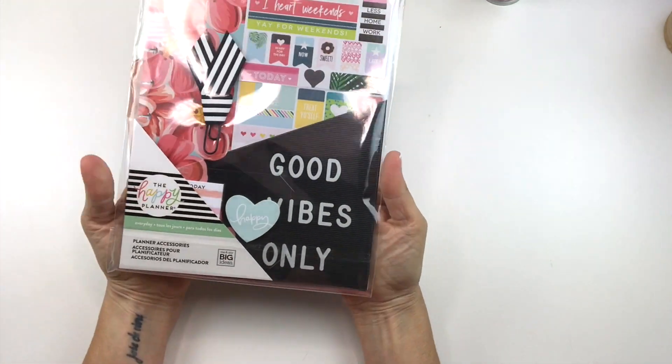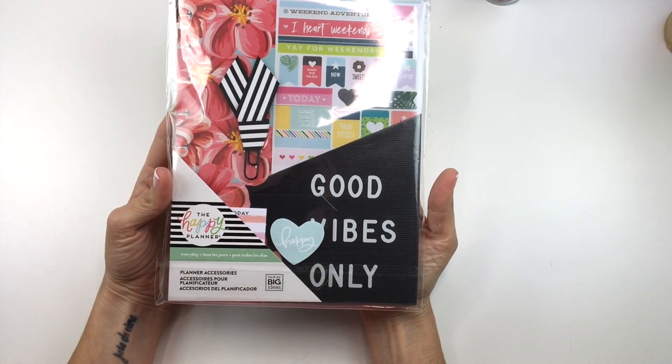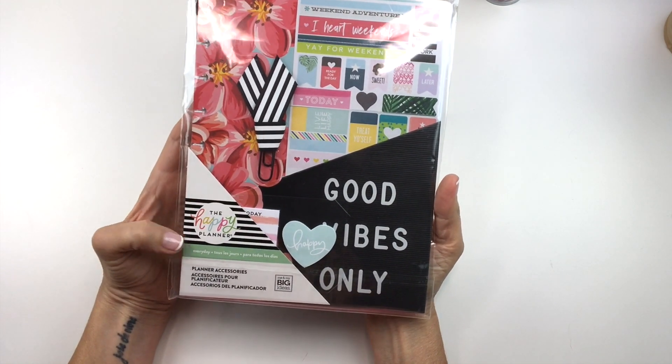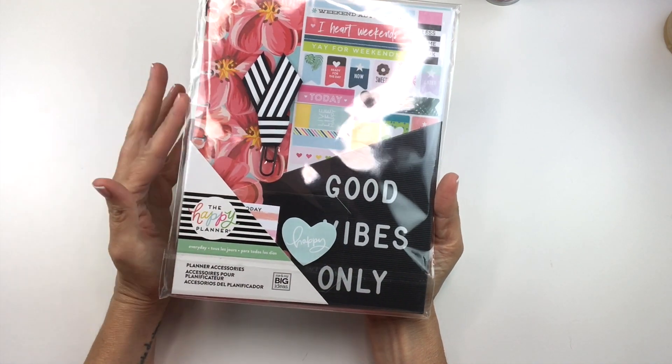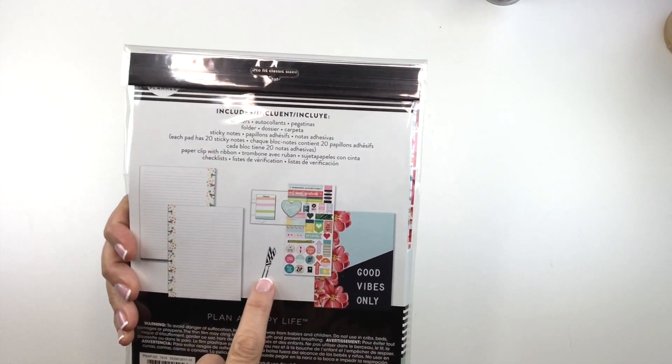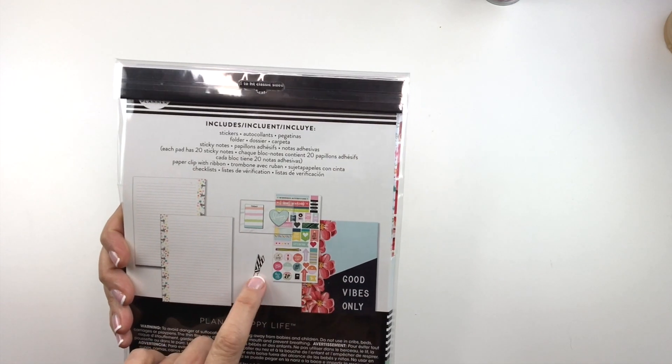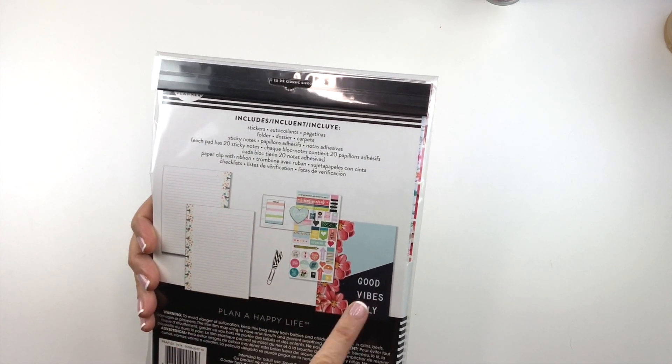Here we have a student Happy Planner accessory pack. This is called Every Day and this is from last summer. And in it you have some notepaper, stickers, a little whatchamacallit clip with a ribbon and then some sticky notes and a folder.